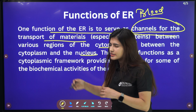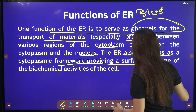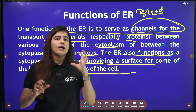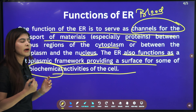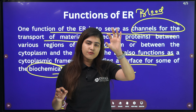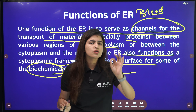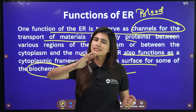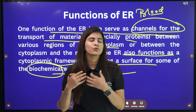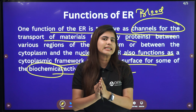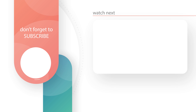Proteins and other materials are transported to different regions of the cell such as the cytoplasm. The ER also provides a framework for the whole cell, and this framework is very necessary for biochemical activities. The ER is a crucial cell organelle that many other organelles depend upon. I hope this video was very helpful — till then, stay tuned and happy learning!